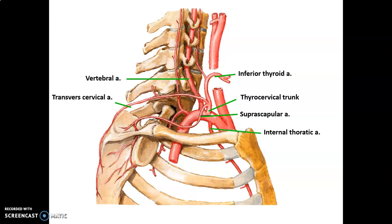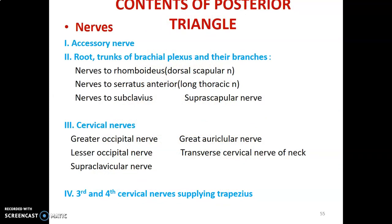The contents of the posterior triangle include the accessory nerve, roots and trunks of the brachial plexus, and nerves arising from those roots and trunks — such as the nerve to rhomboids (dorsal scapular nerve), nerve to serratus anterior (long thoracic nerve), nerve to subclavius, and the suprascapular nerve which innervates the supraspinatus and infraspinatus muscles.